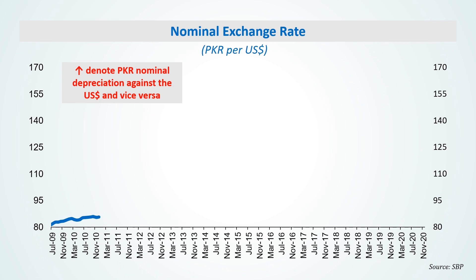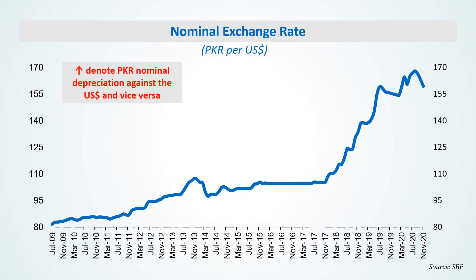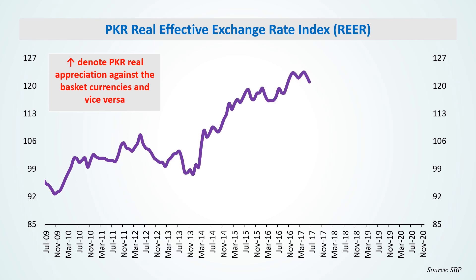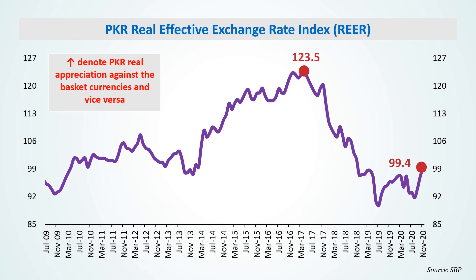Before moving on to interpretation of the REAR, let's recall that in the bilateral exchange rate of PKR in US dollar, an increase in value means a depreciation of PKR, as more PKR are now required to buy one US dollar. However, since the REAR index is calculated by defining exchange rate in terms of domestic currency, an increase in the REAR index means real appreciation of local currency against the basket of trading partners and competitors' currencies, and vice versa. You can see that in recent years, the REAR index has declined from the peak of 123.5 in April 2017 to 99.4 in November 2020. This indicates a PKR depreciation of around 19.6% in real terms against the trading partners and competitors' currencies.